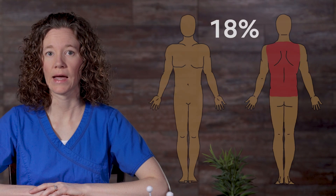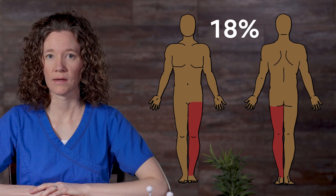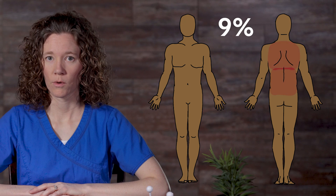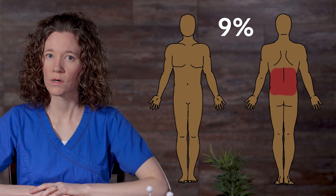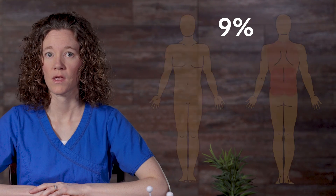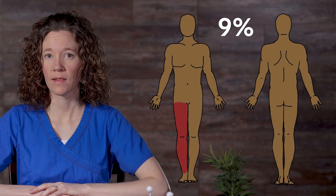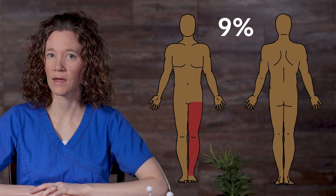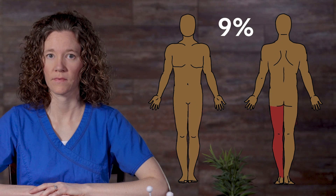Three parts are labeled 18%: the entire back, the entire left leg, and entire right leg. These can also be broken down into 9% sections — the upper back and lower back, or similarly the right side and left side of the back. The legs can be broken into the front right leg, the back right leg, the front left leg, and the back left leg.